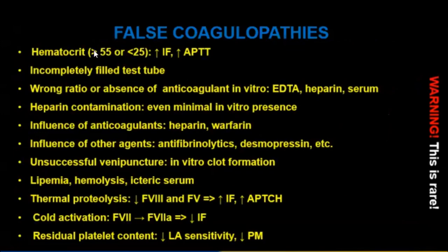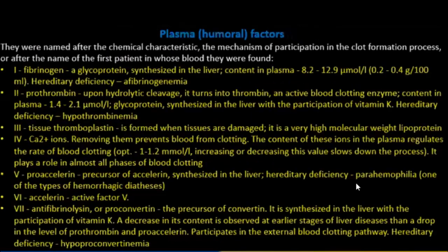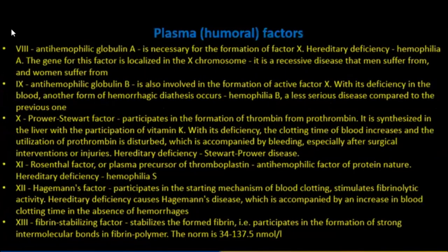False coagulopathies involve hematocrit considerations and the Bronchov ratio. Plasma humoral factors are named after their chemical characteristics, their mechanism of participation in clot formation, or after the name of the first patient in whose blood they were found.